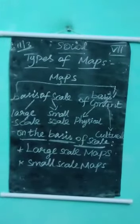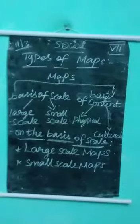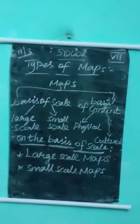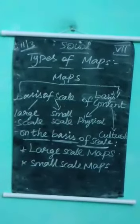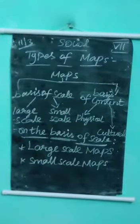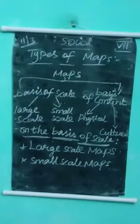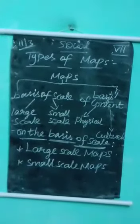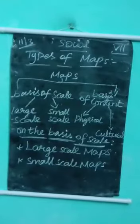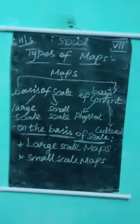The other example of a small-scale map is the atlas. An atlas is a collection of map books. In the book we can see different types of map content. These are the examples of small-scale maps.